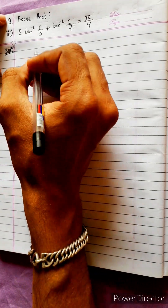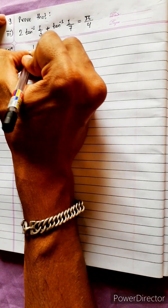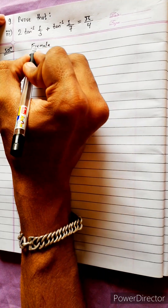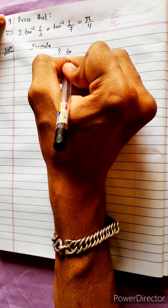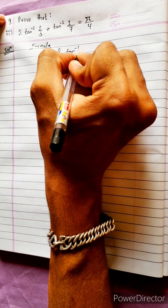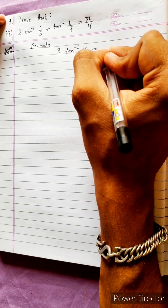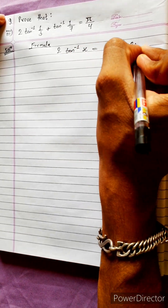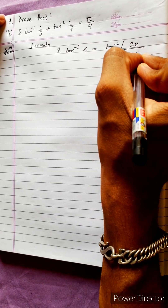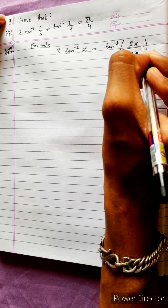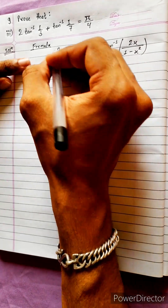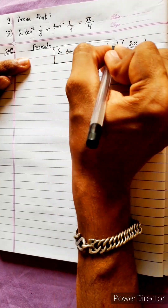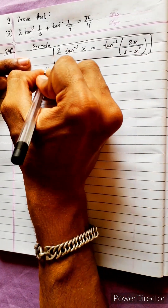This is the formula: 2·tan⁻¹(x) equals tan⁻¹(2x upon 1 minus x squared). This is the formula. This is the proof of the law. We have to take the law here.